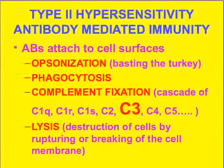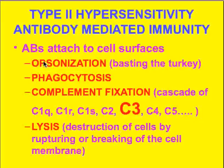In type two situations we have antibodies attached to cell surfaces. They can result in complement fixation if the cascade of complement proteins is triggered following these antibodies attaching to cell surfaces. They can also result in phagocytosis of the cell, as well as opsonization — which I describe as 'basting the turkey,' or coating the cells and particles to get them ready for phagocytosis.